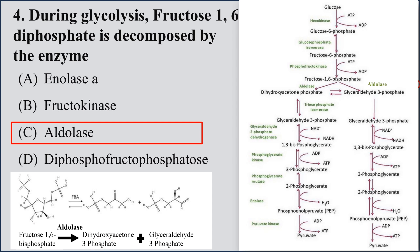As you can see in the glycolysis pathway, it is a 10-step reaction with an investment phase, a splitting phase, and then the payoff phase. They have specifically asked about the fructose 1,6-bisphosphate reaction, catalyzed by the enzyme aldolase, which splits fructose into dihydroxyacetone phosphate (the keto group) and glyceraldehyde-3-phosphate (the aldehyde group).